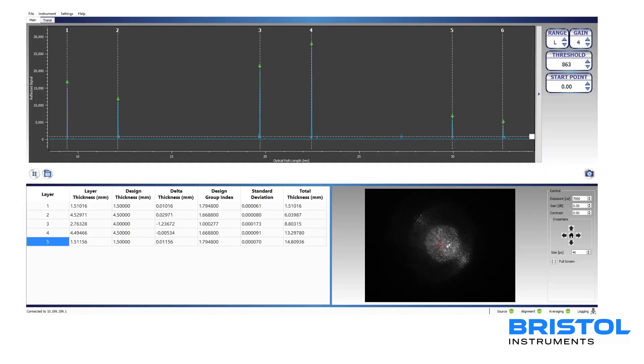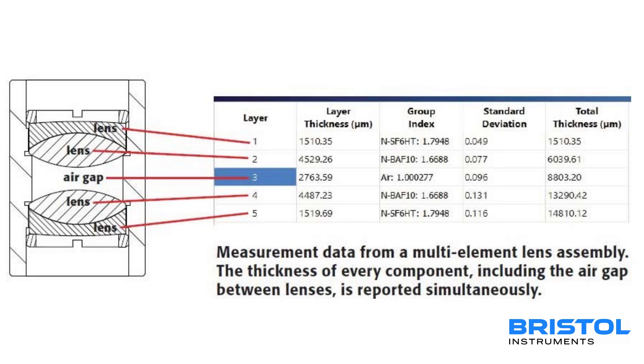Results are shown on the included Opti-Cal software interface. Here we can see the results of a dual achromat doublet assembly, which has two doublets and an air gap in between.